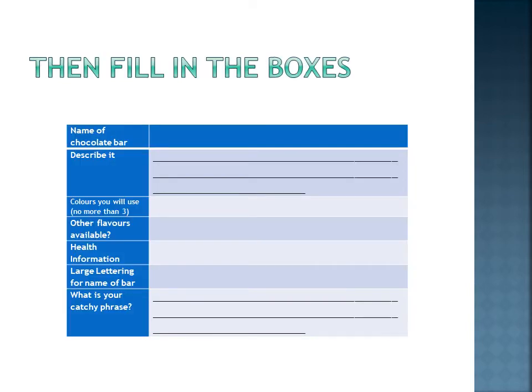Then you've got some boxes to fill in to help you, to remind you when you come to do your own full version. First of all, the name of the chocolate bar. Describe it — I want a sentence or a phrase saying what it is. The colours you've used or the colours you will use; try and keep it to no more than three. Are there other flavours available, or does it just come in the one?